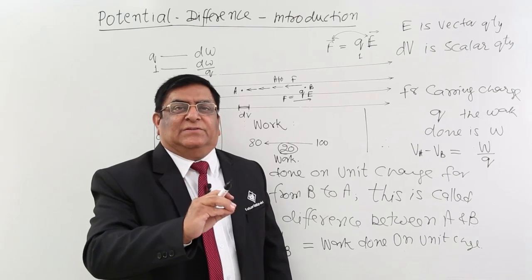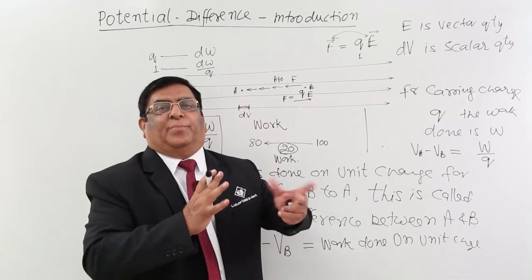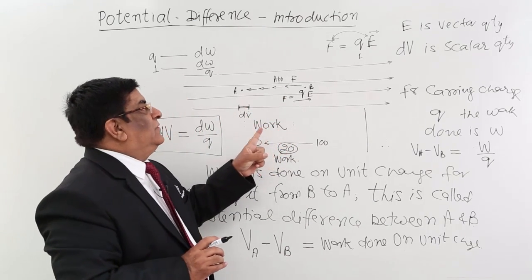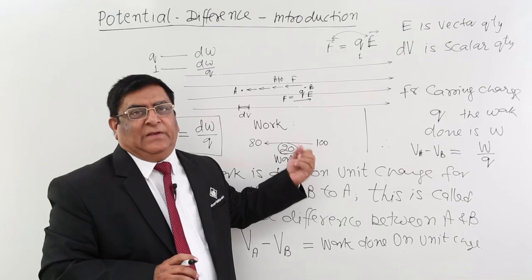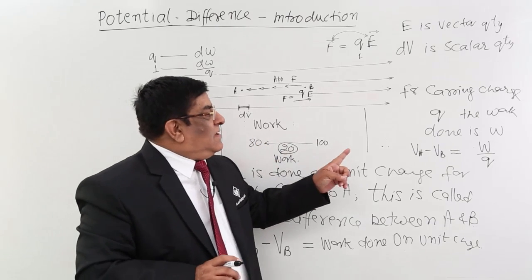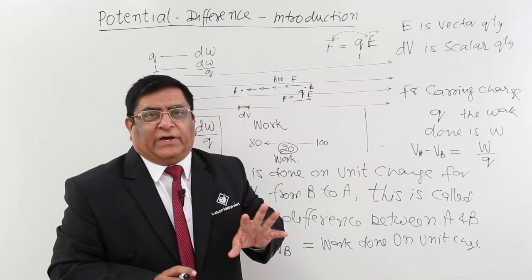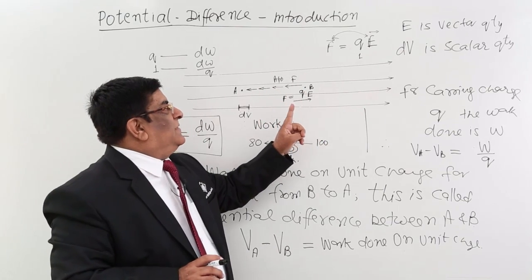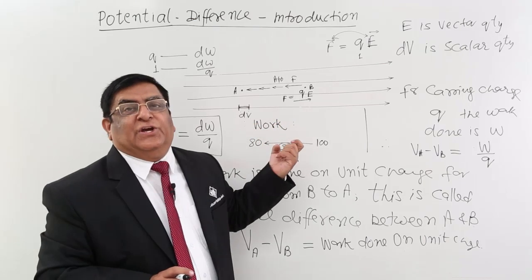Scalar quantities are very easy to deal with. Their multiplication, addition, and division do not require any direction, so it becomes very easy to operate with them mathematically. Therefore, all our calculations in the electric field we would like to do in terms of potential difference rather than in terms of electric field directly, and we will find the relation between the two. In an electric field, the characteristic for measurement between any two points — depending on the strength of the electric field — is called potential difference.